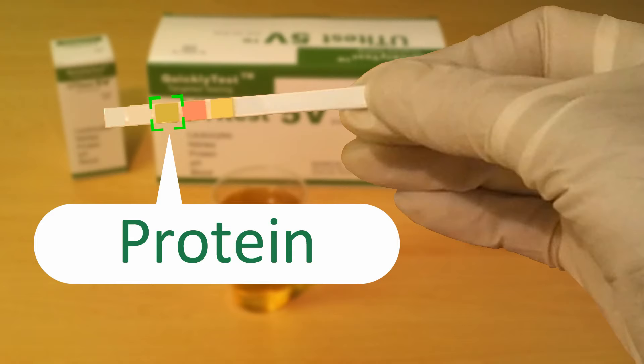Next, let's take a look at the indicator in the middle of the strip. This test is looking for protein. If your results show to be green or turquoise in color, this means that there could be some kidney involvement, and you should seek medical advice from a doctor.